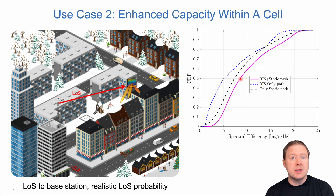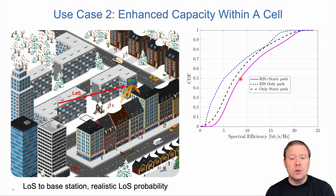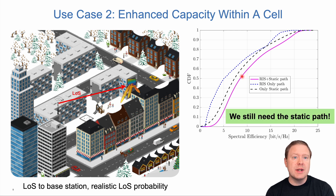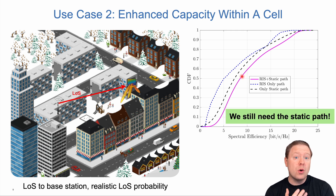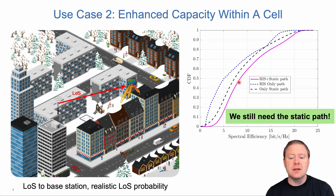It's also important to notice that if we remove the static path — which many technical papers ignore — we lose all the performance. So the point is that we still need the static path. We cannot rely only on the RIS, but we can get some improvements. They are not very large, but they are consistent throughout the cell.